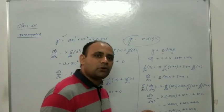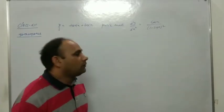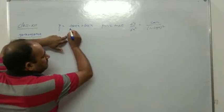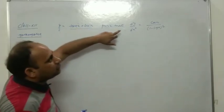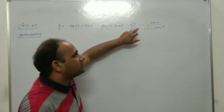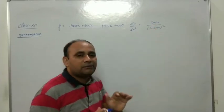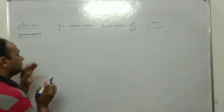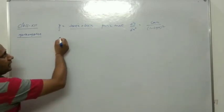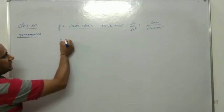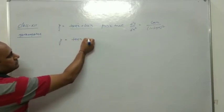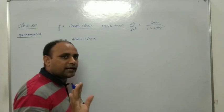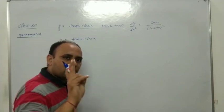Next problem: y = tan(x) + sec(x). Prove that d²y/dx² = cos(x)/(1 - sin(x))². We cannot directly find the second derivative. So first, we find the first derivative by differentiating both sides with respect to x.